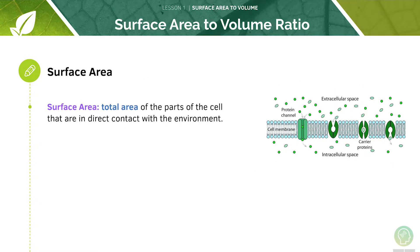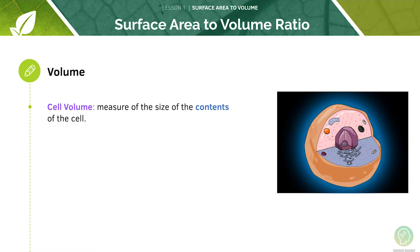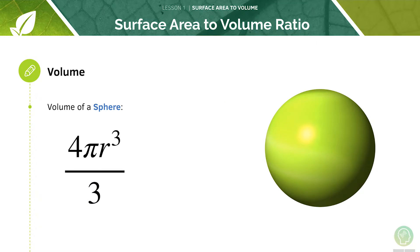Surface area is the total area of the parts of the cell that are in direct contact with the environment. When studying gas exchange, the surface area of the cell is the total area of the cell membrane. The volume of the cell is a measure of the size of the contents of it, and can be roughly approximated by using the formula for the volume of a sphere, as shown here.